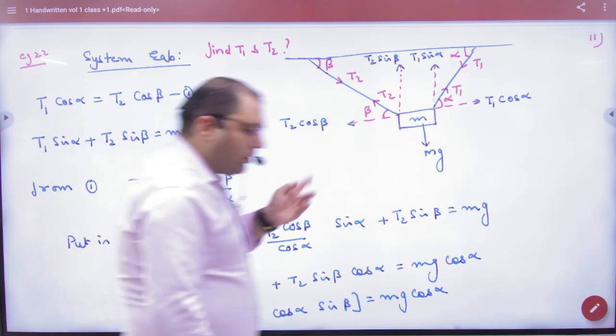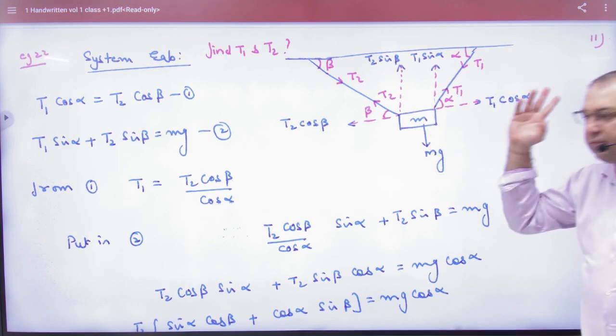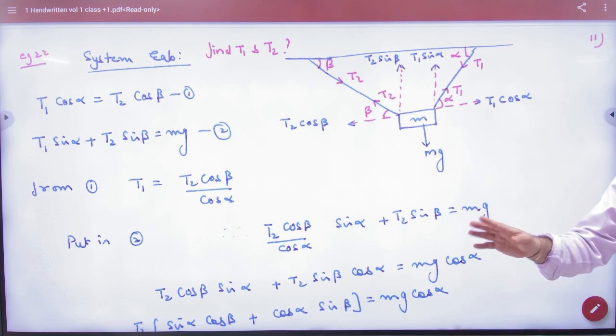So in your booklet, this question is mentioned in which there are two strings. One string and two strings. You have closed the two blocks from the two directions. This you have closed. It is stuck and it is in equilibrium.